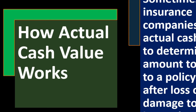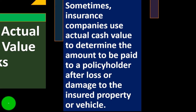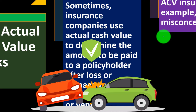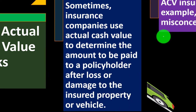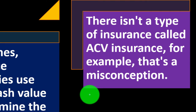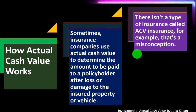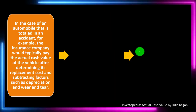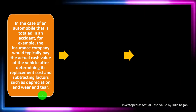How actual cash value works: sometimes insurance companies use actual cash value to determine the amount to be paid to a policyholder after loss or damage to the insured property or vehicle. There isn't a type of insurance called ACV insurance — that's a misconception. It won't generally be called ACV insurance, but they might use the cash value method to determine the payout.